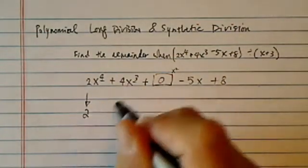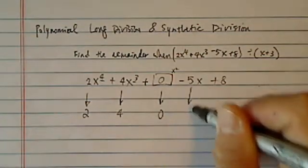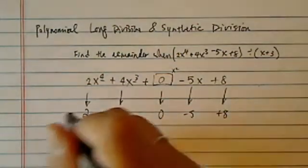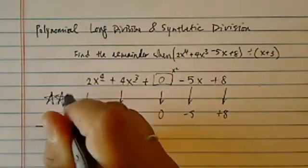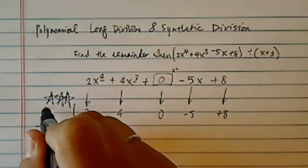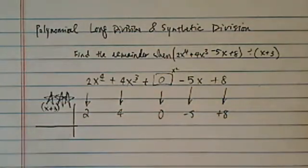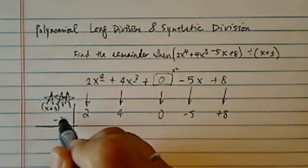So synthetic division says take all the coefficients, even the missing ones. And then here is the big important stuff. You don't put 3 here because we're dividing by x plus 3. Since synthetic division is adding, so every term when you have each step, the step you're adding it.